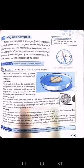How to make a magnetic compass. Materials required: a bowl of water, sewing needle, magnet, a small piece of cork and paper. Procedure: Cut a small circle from the cork that floats in the water. Place it in the center of the bowl in water. Strike the needle across the magnet about 30 to 40 times. Be sure that strokes are in one direction. The needle is now magnetized. Place the needle on the surface of the cork.